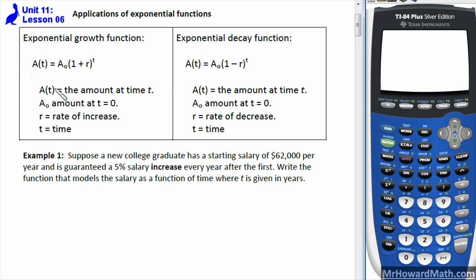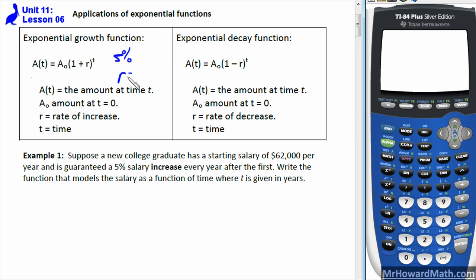So a(t) in both cases is the amount at some time t. a-sub-zero is the amount at time zero — your initial amount, whatever you're starting with. The r is the rate of increase for growth or the rate of decrease for decay. If the rate is five percent, r is going to be 0.05 — rewrite it in decimal form. And t is time in whatever unit you're using, most often years.